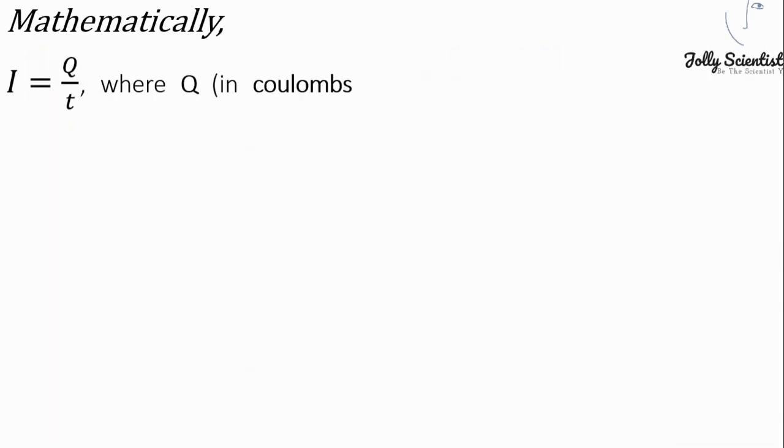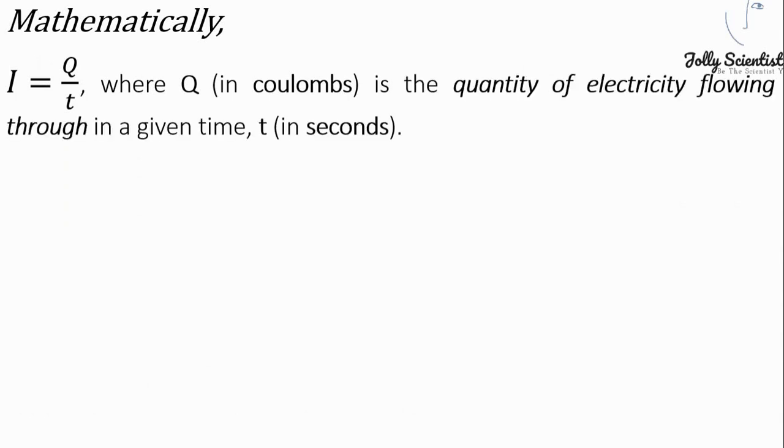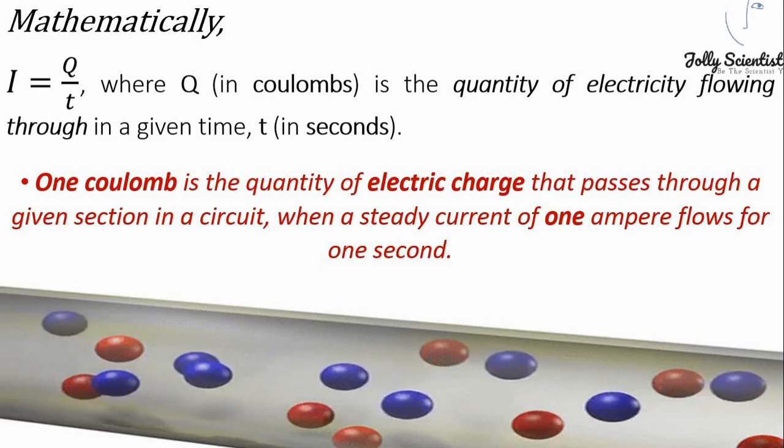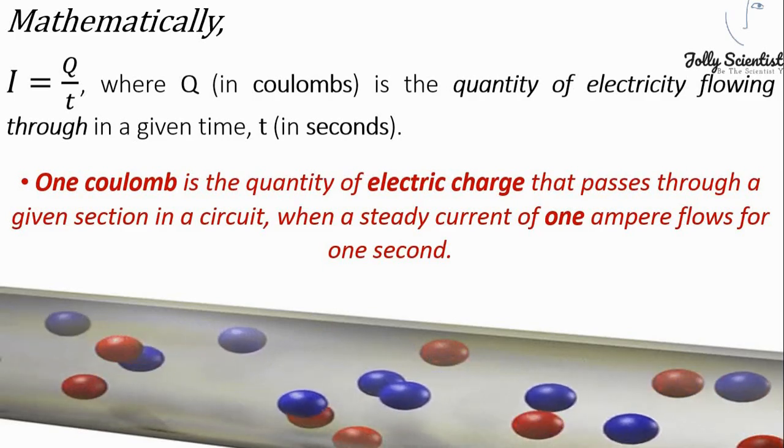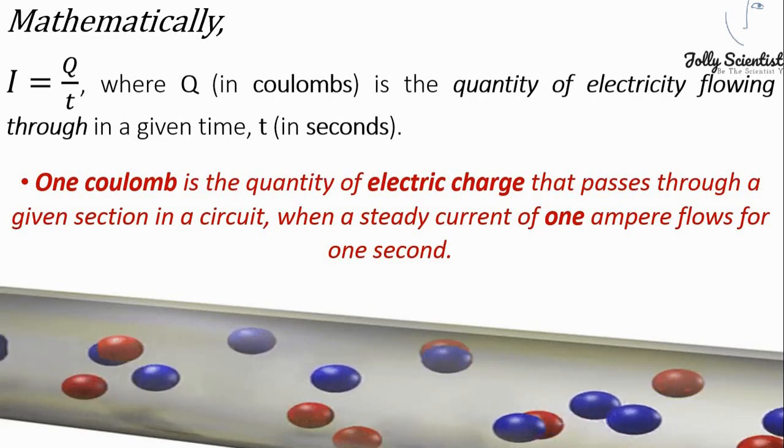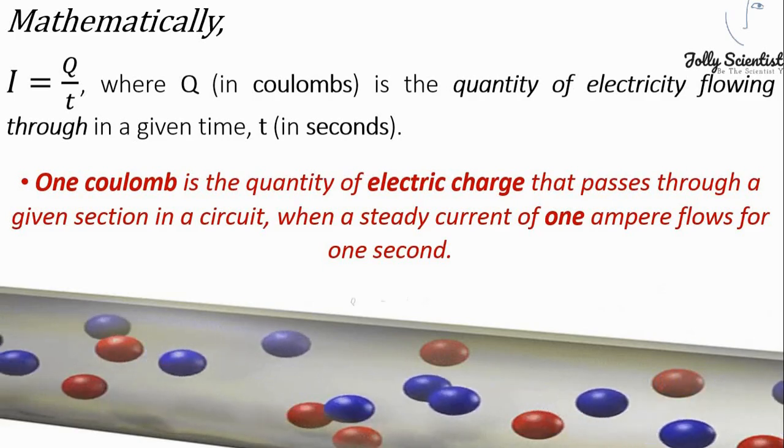Mathematically, current I equals Q over t, where Q in coulombs is the quantity of electricity flowing through in a given time t in seconds. That is, one coulomb is the quantity of electric charge that passes through a given section in a circuit when a steady current of one ampere flows for one second.